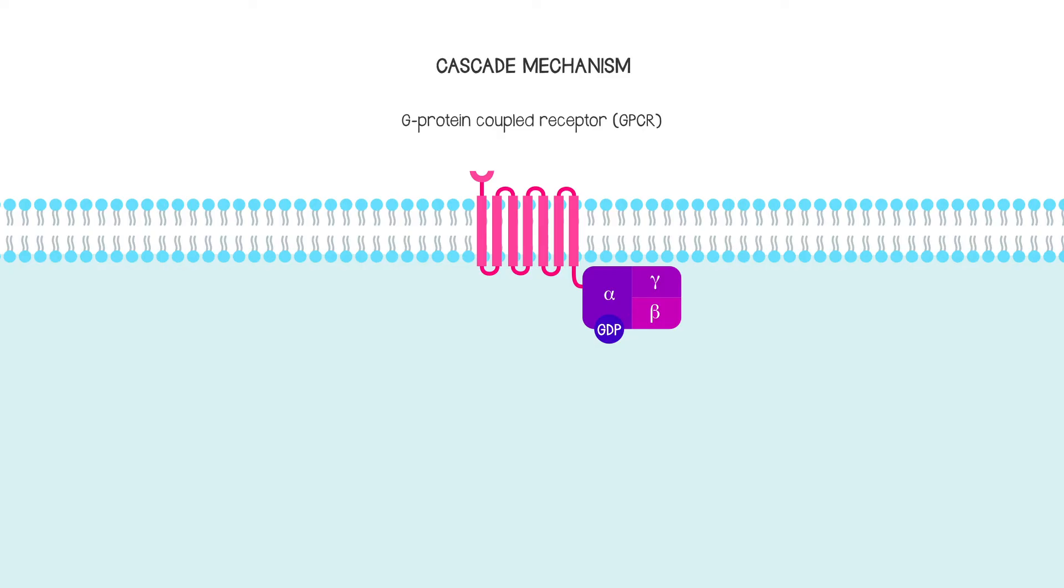And they work through cascade mechanisms along similar lines. But there are other types of receptors for water-soluble hormones also found within the body. They're not all GPCRs.